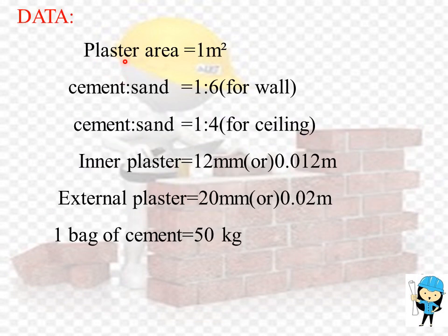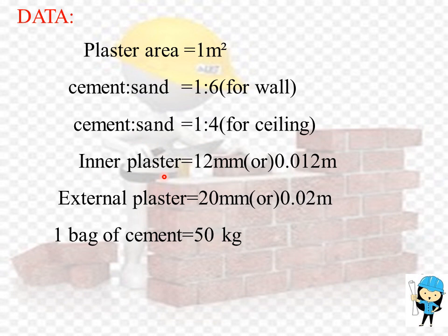Now we are going to calculate the amount of cement and sand required for the plastering of area 1 meter squared. These are the standard values for plastering: cement to sand ratio for plastering wall is 1 is to 6, for ceiling is 1 is to 4. Inner plaster is equal to 12 mm and external plaster is equal to 20 mm. One bag of cement contains 50 kg of cement. These five values are standard values.